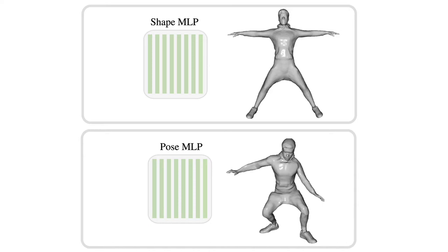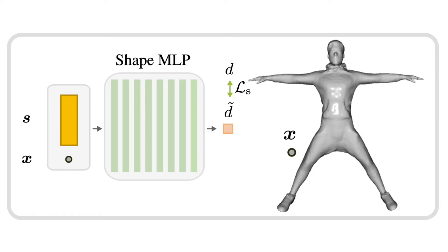The latent shape space, implemented as an autodecoder conditional on a shape code S, learns to implicitly represent different identities in their canonical pose by mapping a query point X to its SDF value.